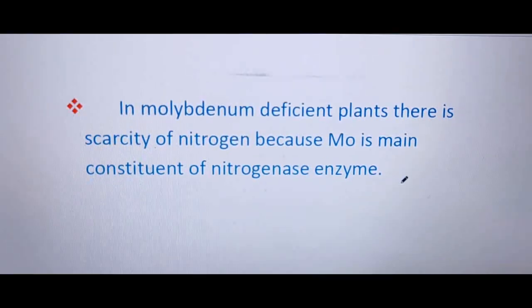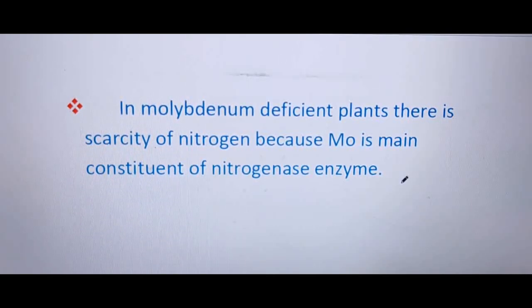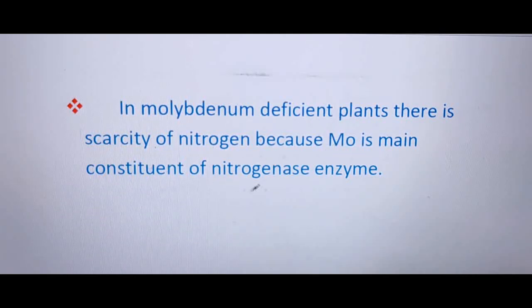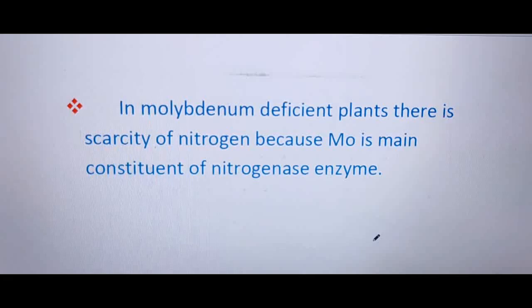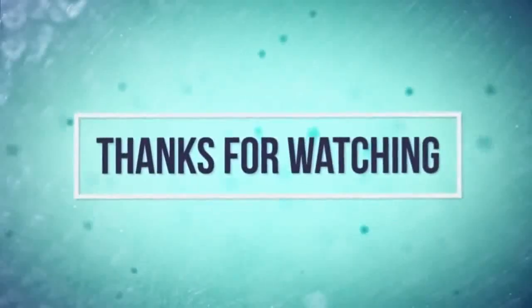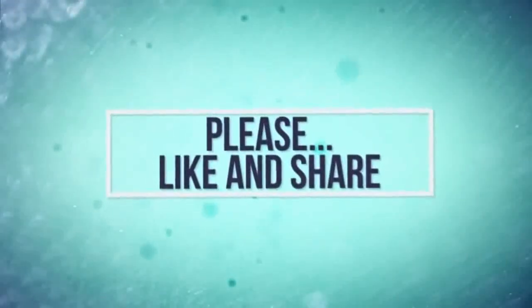In molybdenum-deficient plants, there is scarcity of nitrogen because molybdenum is the main constituent of nitrogenase enzyme. When molybdenum is deficient, nitrogenase cannot function and nitrogen fixation stops. This concludes today's video on nitrogen metabolism.